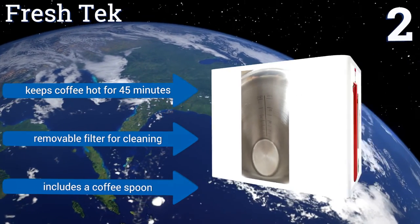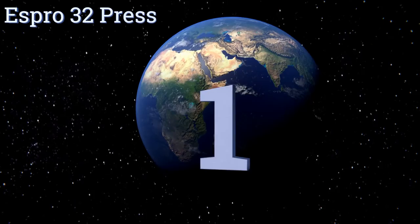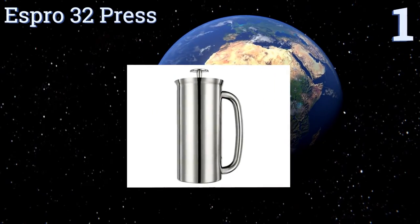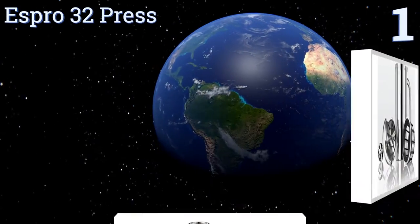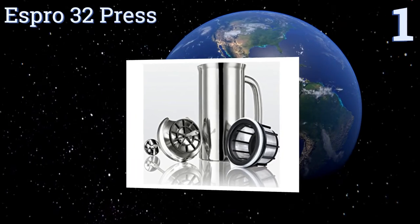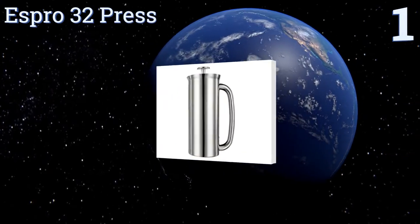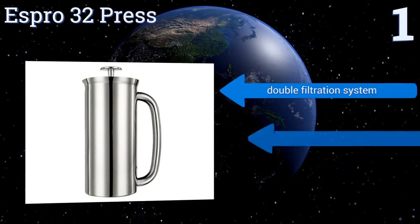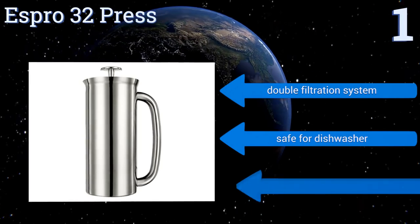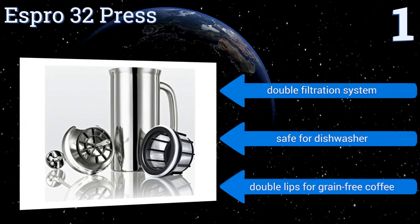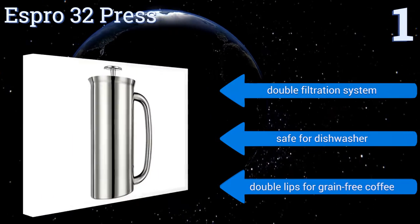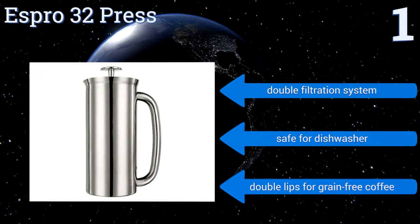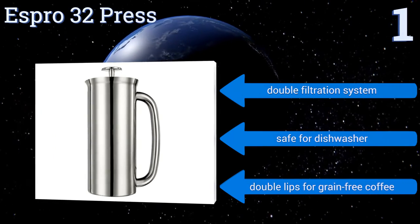Taking the top spot on our list, the Espro 32 Press is available in 8, 18, and 32-ounce models, so whether you just want a single cup for yourself or often drink multiple cups with family members, there's one to suit your needs. It features vacuum-insulated double walls that keep your coffee warm for hours. It boasts a double filtration system and double lips for grain-free coffee. It's safe for the dishwasher too.